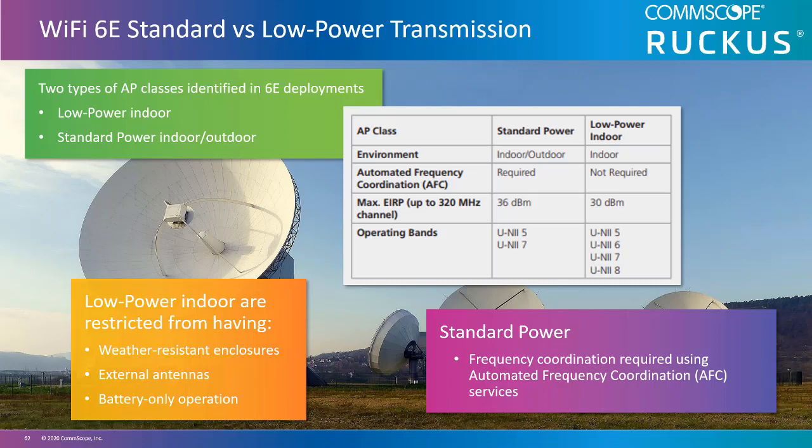As a result, these indoor devices have restrictions on their capabilities and design. These restrictions include not being allowed to have weather-resistant enclosures, external antennas, and battery-only operation. Such restrictions prevent equipment manufacturers that create Uni-5 and Uni-7 band-supported APs from causing potential interference problems for incumbents. There is also a new very low-power category identified in the FCC's notice for portable devices, possibly providing an option other than Bluetooth as a personal connection.